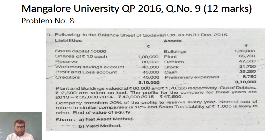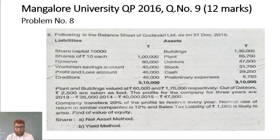Out of debtors, rupees 2,500 are taken as bad. The profits for the company for 3 years are: 2013 — 35,000; 2014 — 40,000; 2015 — 47,500. The company transfers 20% of profit to reserve every year. Normal rate of return in similar companies is 12%. A sales tax liability of 1,000 is likely to arise. Find out the value of equity shares under net asset method and yield method.